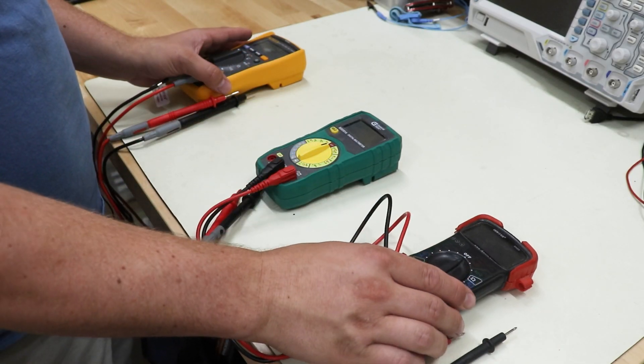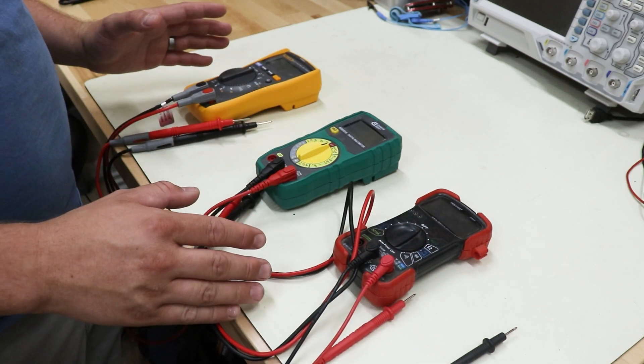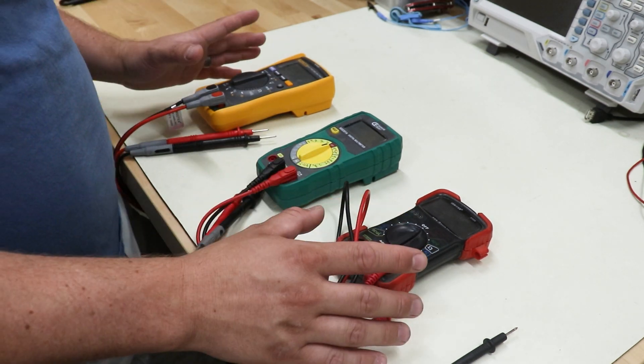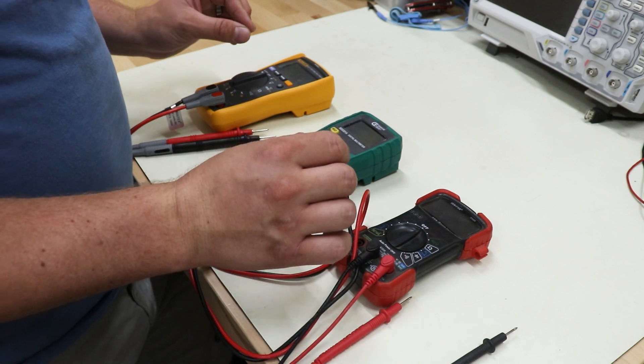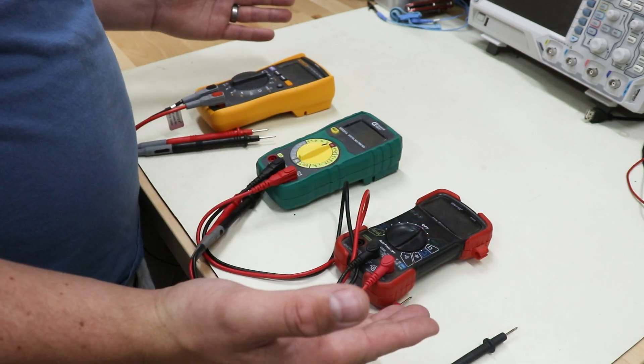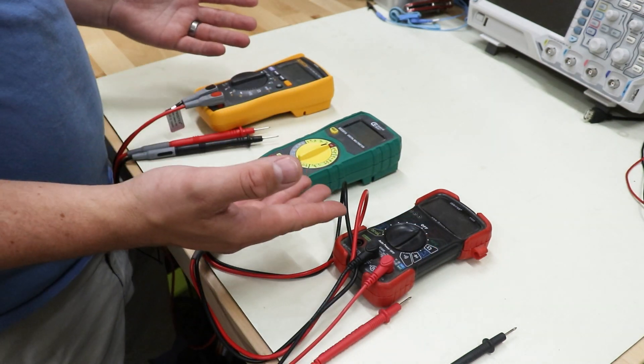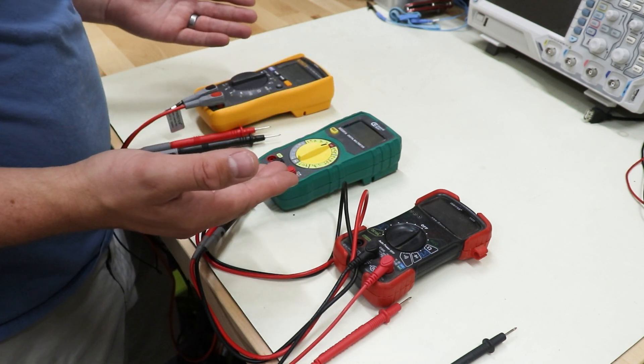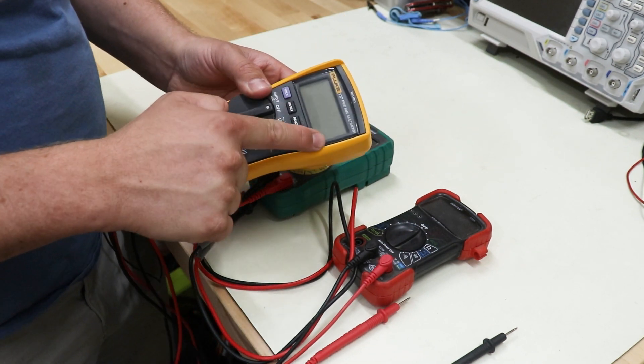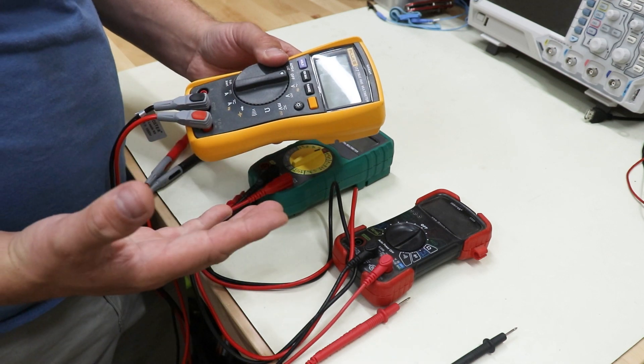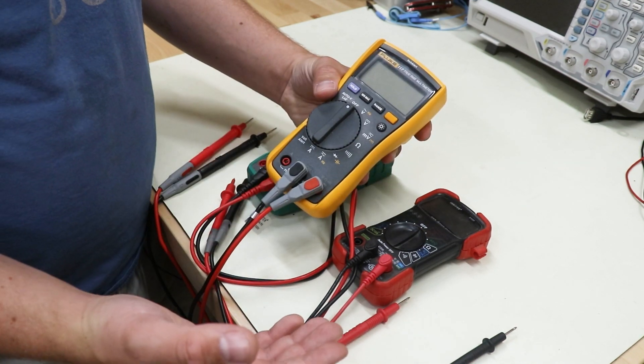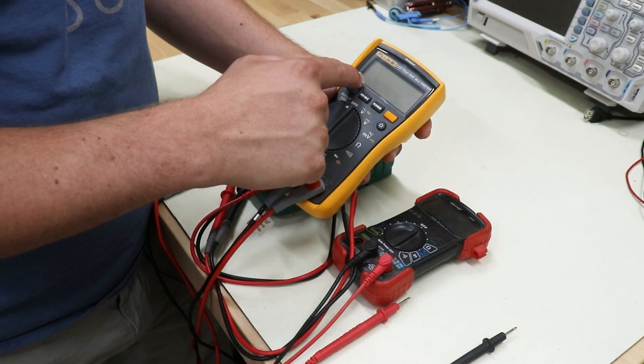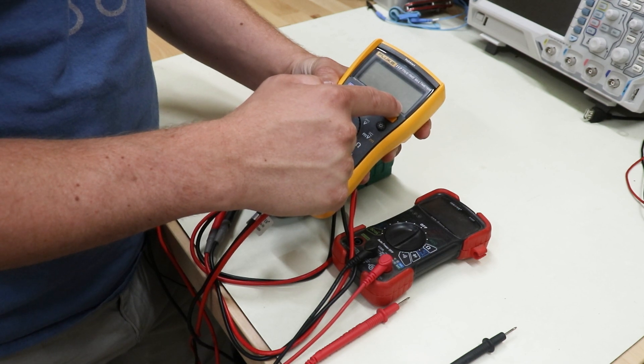One last feature I want to talk about when it comes to multimeters is something called auto-ranging. Auto-ranging is the ability for multimeters to take a measurement and automatically move the decimal place to show precision when it's needed. For example, each of these multimeters can measure voltages up to 600 volts, and there's really not enough digits on these displays to show precision at that high of a value. However, if you're measuring something lower like 5 volts, there are enough digits on here to give you several decimal places of precision.